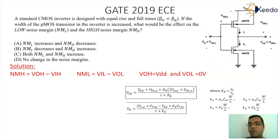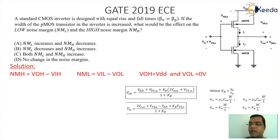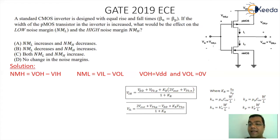If you see the formula for KP, which is µP×Cox×(W/L) — referred to as βP in the question — the width is going to get increased for the PMOS. So W will increase, and if W increases, KP increases. As per that logic, if KP increases, the denominator of KR will increase. So in short, KR will decrease. Therefore, if I increase the width of the PMOSFET, the value of KR is going to decrease.